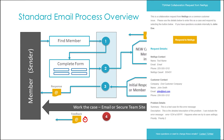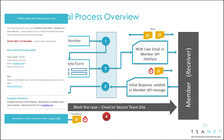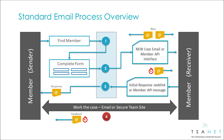The receiver will receive an email with a button to respond to the case. This takes them to a form where they enter their case number, engineer name, and contact details. This information is then sent back to the sender. TSAnet Connect will monitor for initial response SLA and trigger escalation processes as needed.